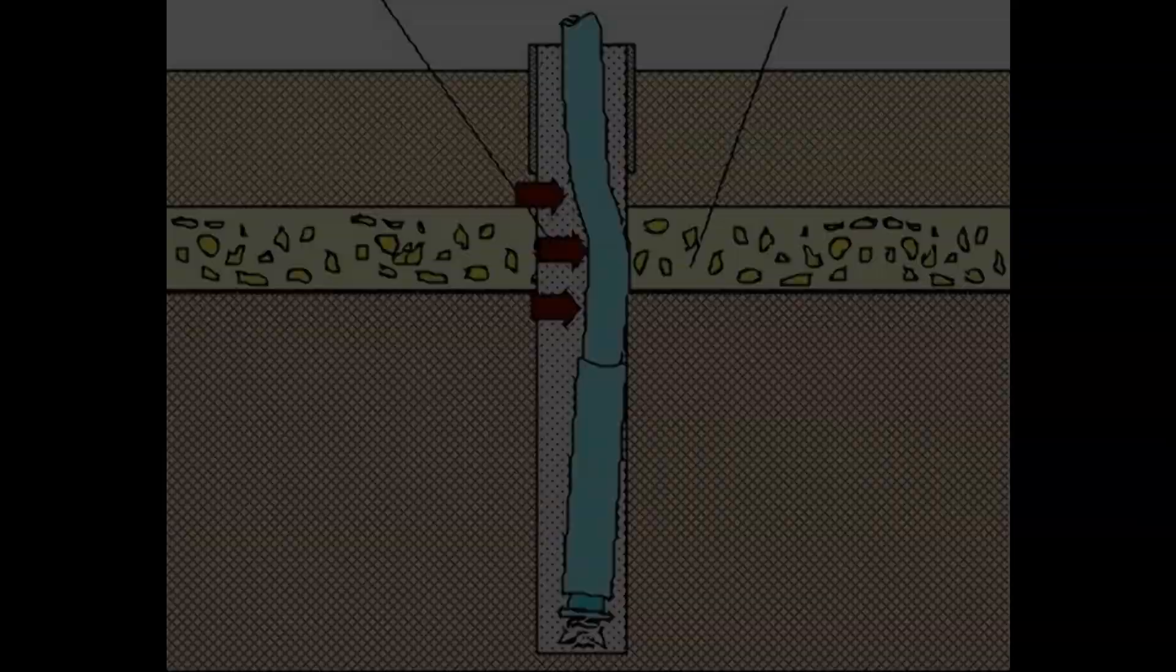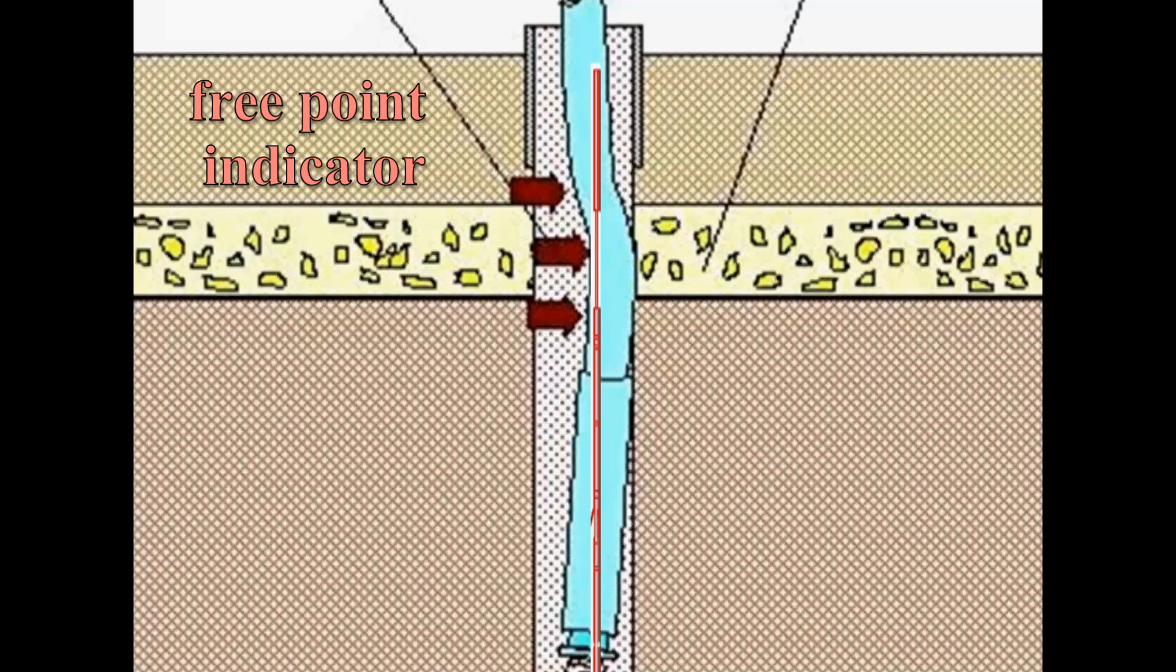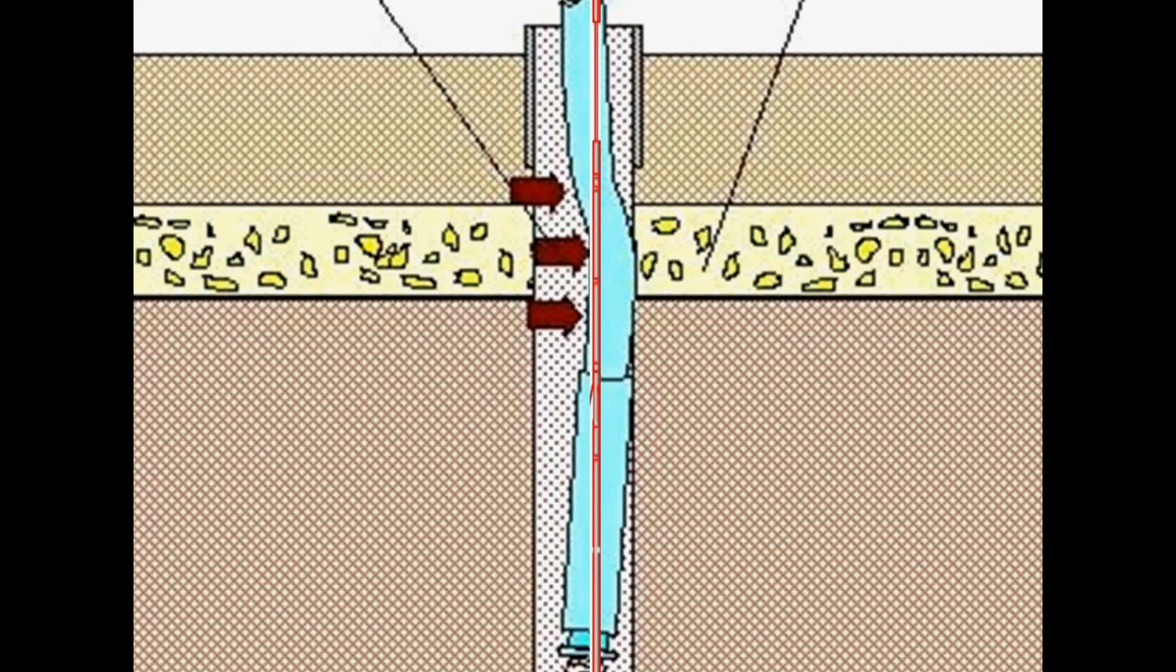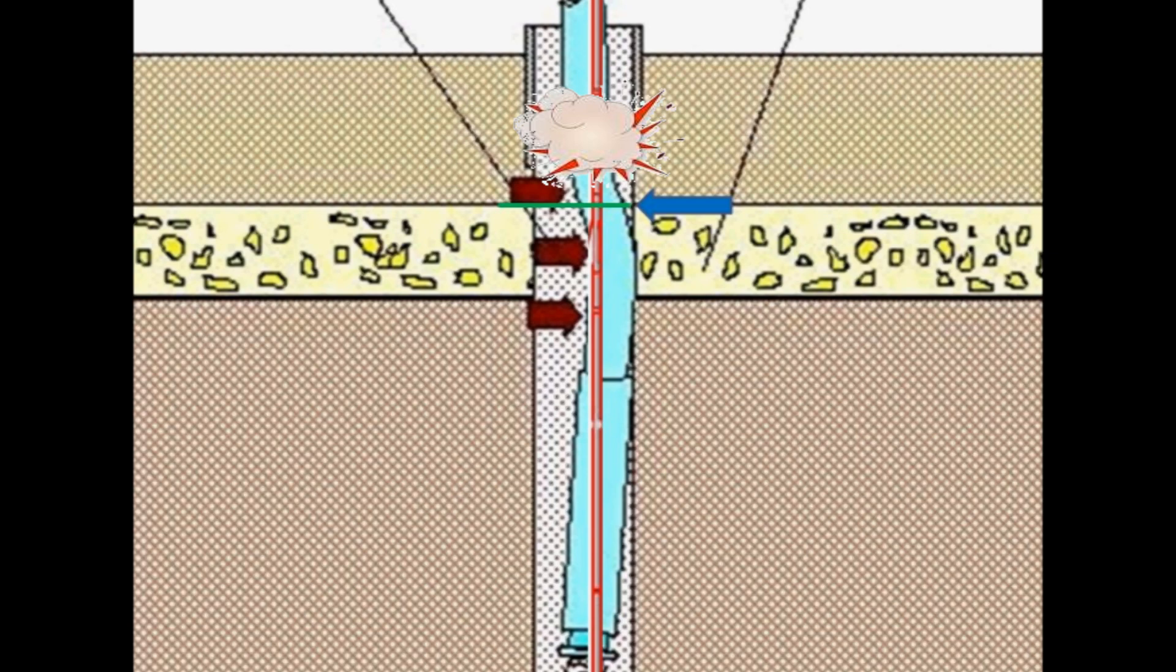If this approach fails, it may be time to run a free point indicator down the drill string by wireline. In this approach, tension is pulled on the drill string while the free point indicator locates the point below which the pipe is not in tension. Identifying exactly the spot below which the pipe is not in tension as the place where the pipe is stuck allows for a light explosive to be run down the inside of the drill pipe and detonated immediately above the free point.